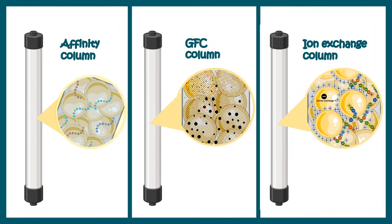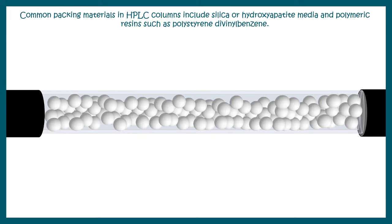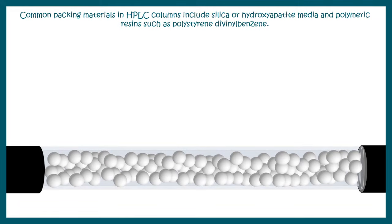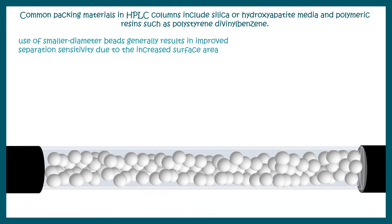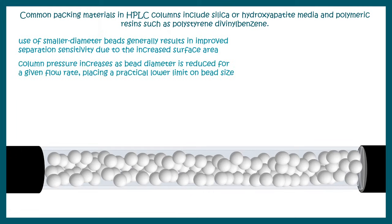The HPLC column materials include silica, hydroxyapatite media, or polystyrene-type beads that can withstand very high pressure. Usage of smaller diameter beads generally results in improved separation due to the increased surface area. However, column pressure increases as the bead diameter is reduced, so there is always a cutoff limit on how small the bead size can go.